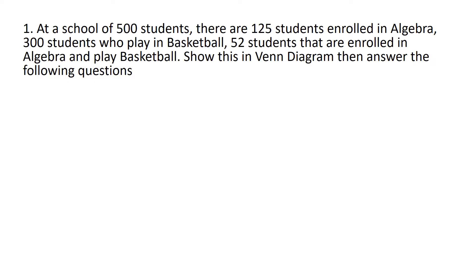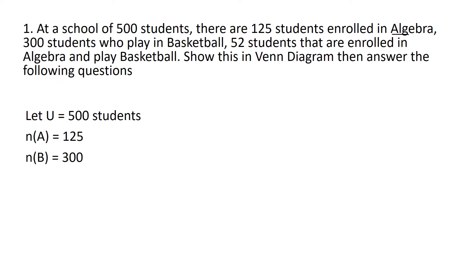Example number one: at a school of 500 students, there are 125 students enrolled in algebra, 300 students who play basketball, and 52 students that are enrolled in algebra and play basketball. So our universal set is 500, the cardinality of set A (algebra) is 125, the cardinality of set B (basketball) is 300, and the intersection of algebra and basketball is 52.